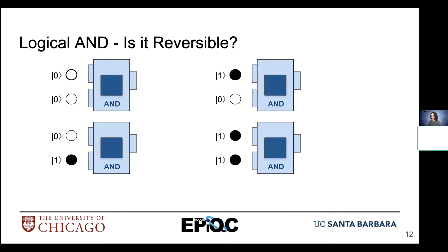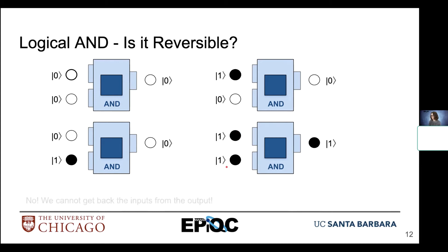We said that many classical gates are not reversible. Let's confirm this with the AND gate — is AND reversible? Well, if we have an input of one and one, we get an output of one. But in all other cases we get an output of zero. This makes it ambiguous — there's really only one case where we can guarantee with a hundred percent certainty that we know the inputs. So the logical AND operation from classical computing is not reversible, because in those three cases we are not able to generate the inputs from the output.